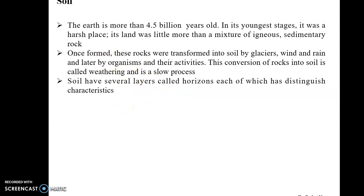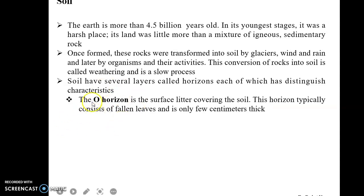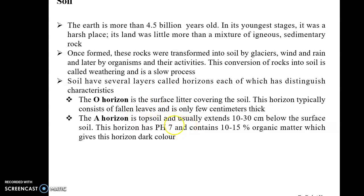At this time, soil has different layers, each of which has distinguished characters. The first layer of soil is known as the O horizon — that is the surface layer, which is covered with different types of fallen leaves, and it is only a few centimeters thick.